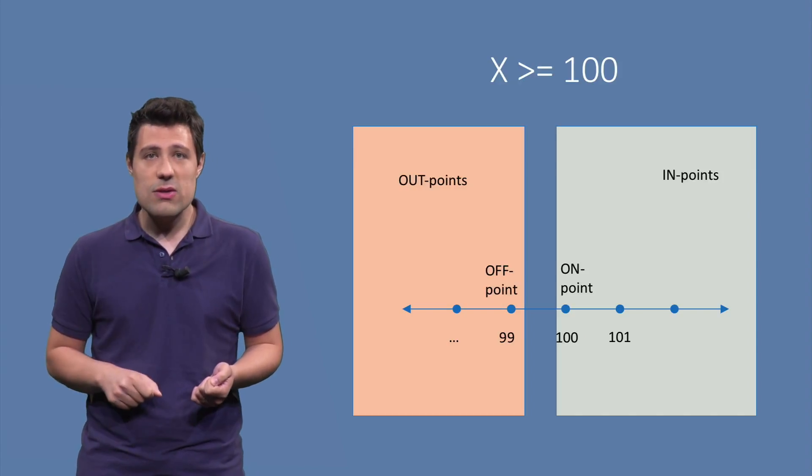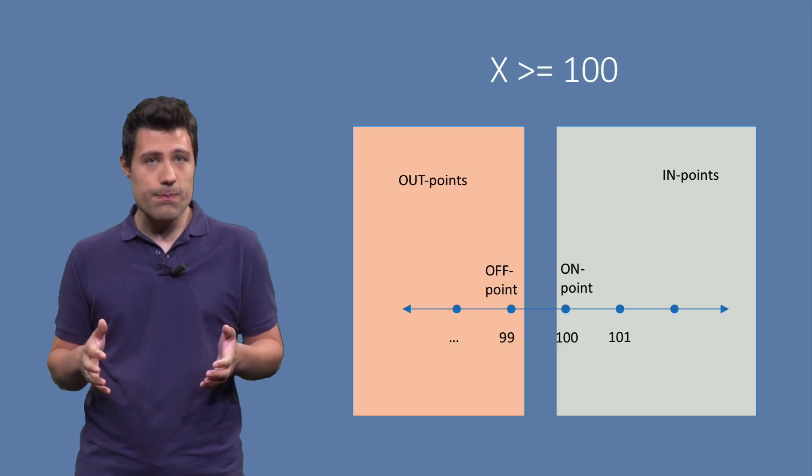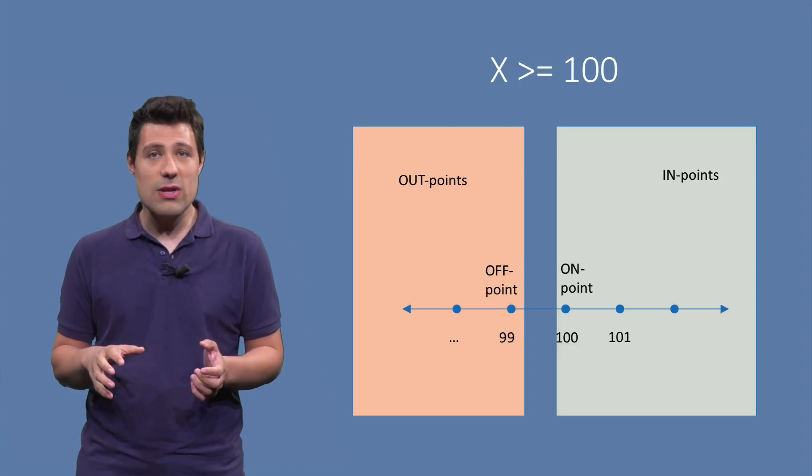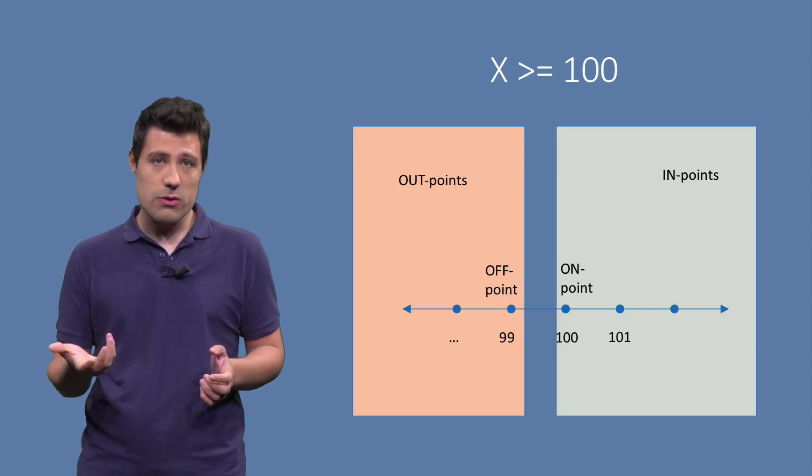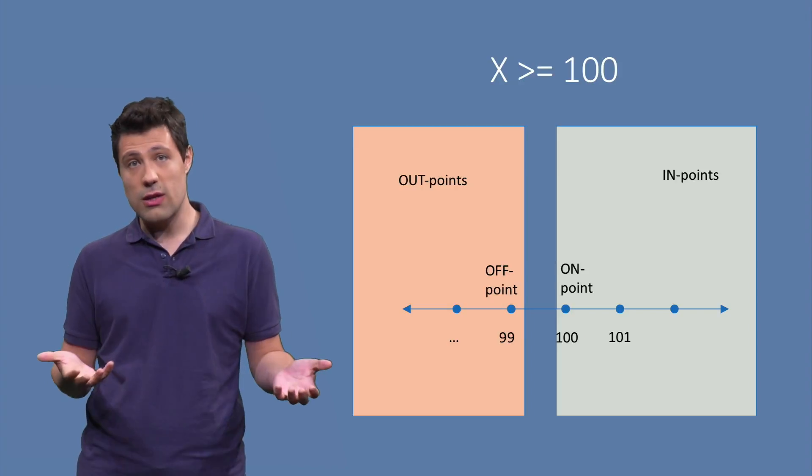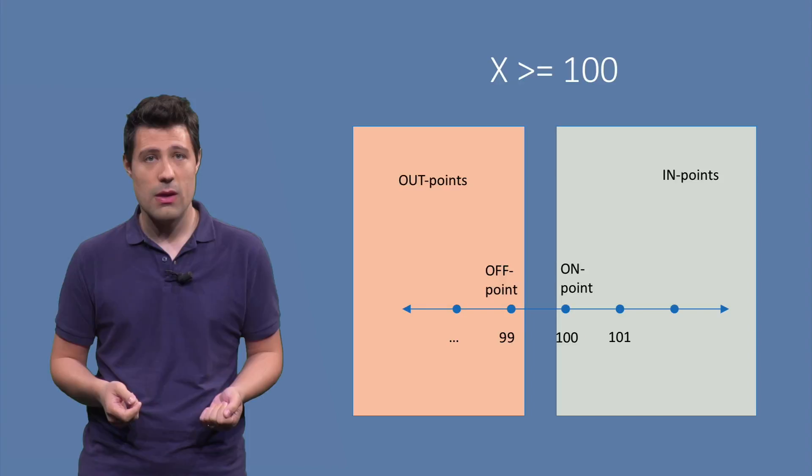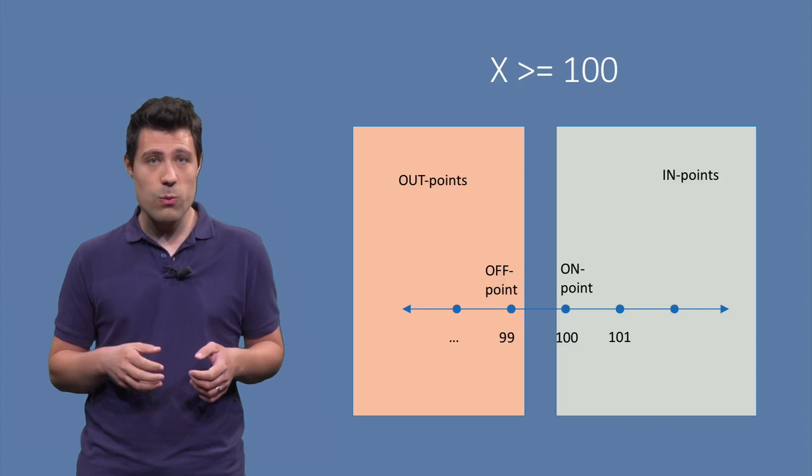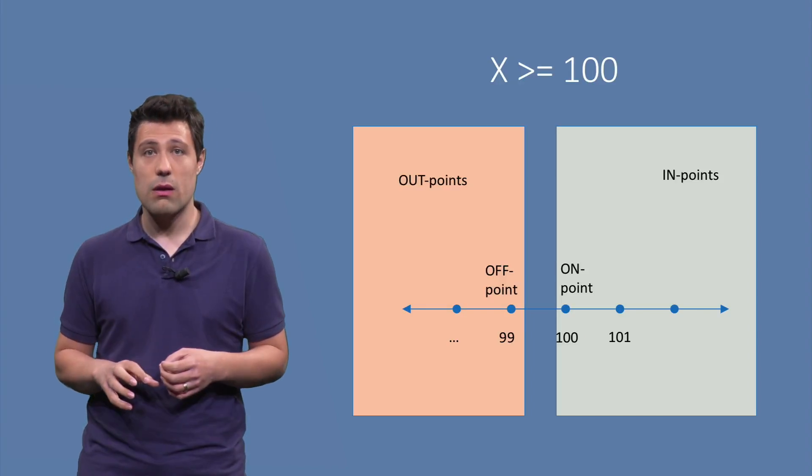So in this case, 99 is the first number, the one that is closer to 100, that makes the condition evaluate to false, because 99 is not greater than or equal to 100. So what happens to our system when the input is on point and off point?